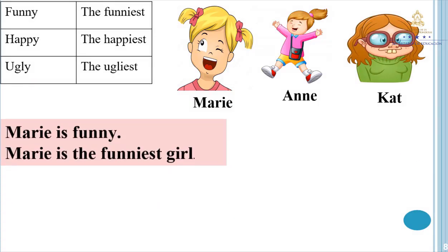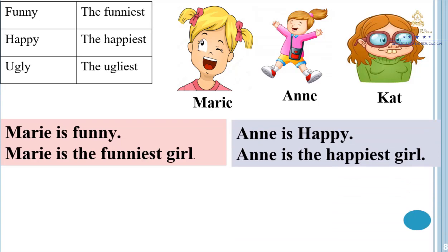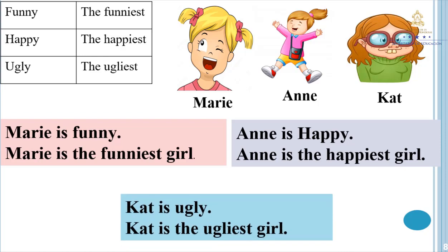Mari is funny. Mari is the funniest girl. Annie is happy. Annie is the happiest girl. Cat is ugly. Cat is the ugliest girl.